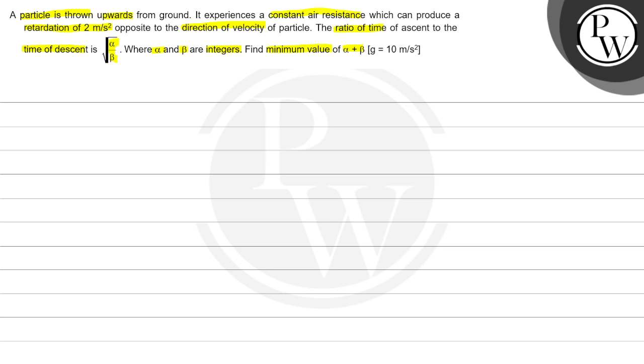Now, this question has been given that there is a particle that we have thrown in the upward direction and that particle experiences air resistance with the retardation of 2 meter per second square opposite to the direction of velocity. So if our particle is going in one direction, from the opposite direction we will get air resistance. We have to find the ratio of time of ascent to the time of descent which is under root of alpha divided by beta.